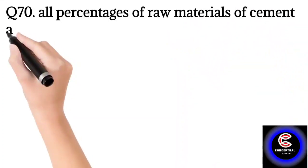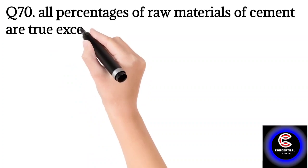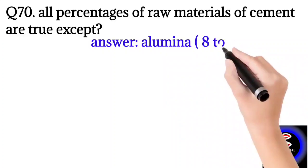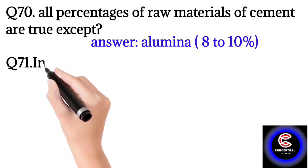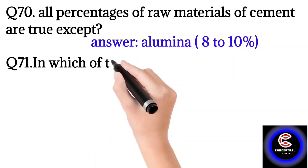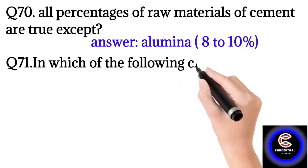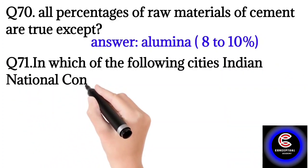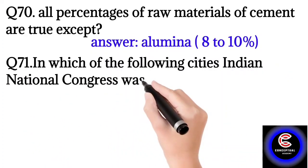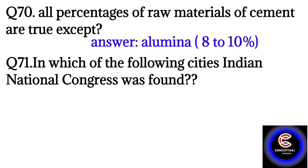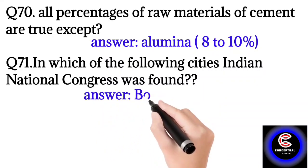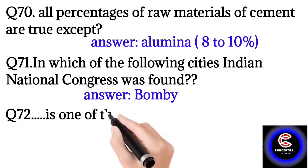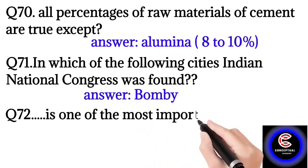Question number 70: All percentage of raw materials of cement are true except? So the answer is pneumonia 8 to 10%. Question number 71: In which of the following cities Indian National Congress was founded? So the answer is Bombay.